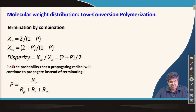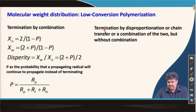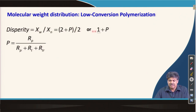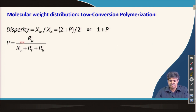A propagating radical can do three types of reactions: propagation, termination, and transfer. The probability p is given by rate of propagation divided by rate of propagation plus rate of termination plus rate of transfer. If termination is by combination or coupling, the degree of polymerization is 2/(1−p) and dispersity is given by one expression. If termination is by disproportionation or chain transfer — without combination — then we have a different expression and dispersity is given by 1 + p.